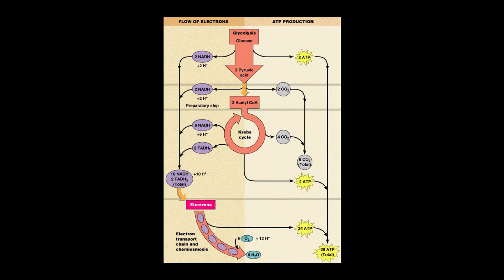So far, glycolysis and the Krebs cycle have netted four ATP molecules from one molecule of glucose. Therefore, the electron carriers NADH and FADH2 have most of the energy extracted from glucose.